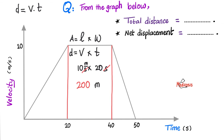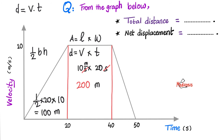The surface area of this rectangle is 200 meters, meaning that the displacement that took place here is 200 meters. Now let's calculate the surface area — the displacement — of this triangle. How do you calculate the surface area of a triangle? It is half the base times height. Here is the base, here is the height. How much is the base? It's 20. Half of that is 10. So half times 20, and then the height is 10. So half times 20 times 10 — half of 20 is 10, times 10 is 100 meters. How about the surface area of this triangle? Half the base times height. The base is from 40 to 50, so 10. The height is also 10. So half times 10 times 10 is 50 meters.